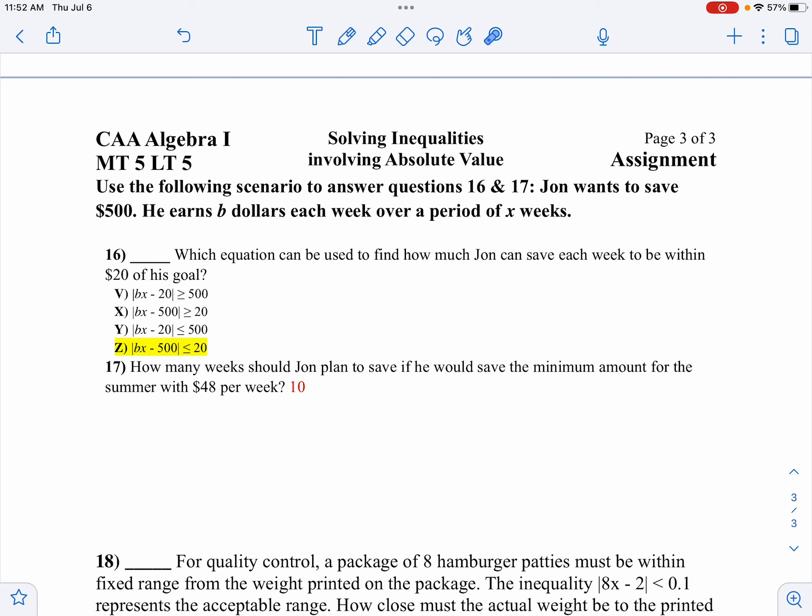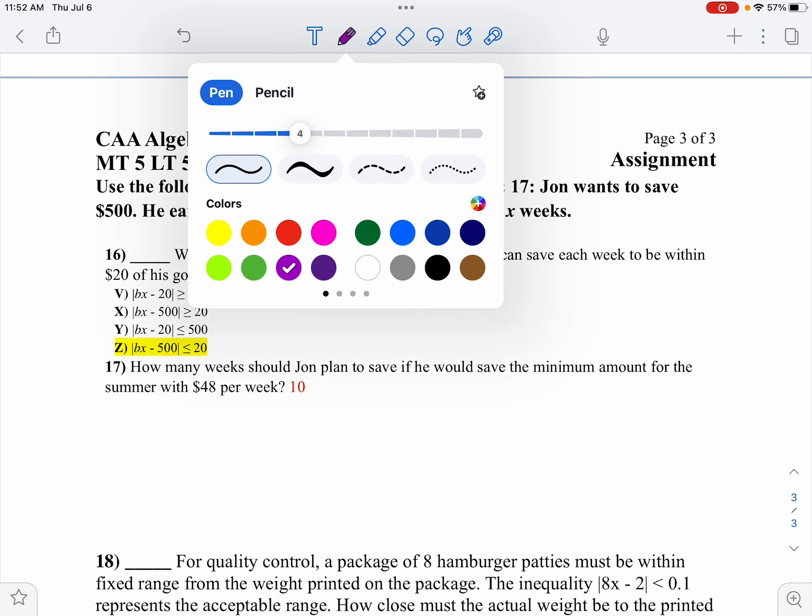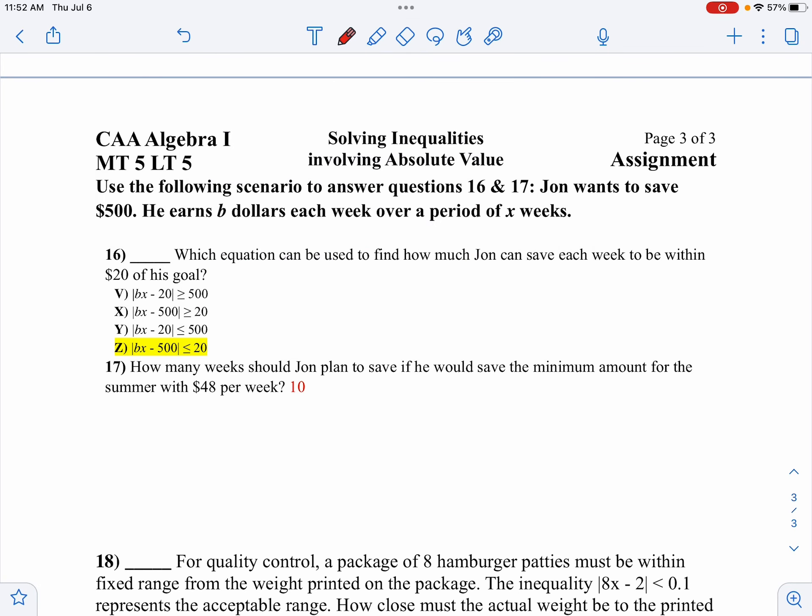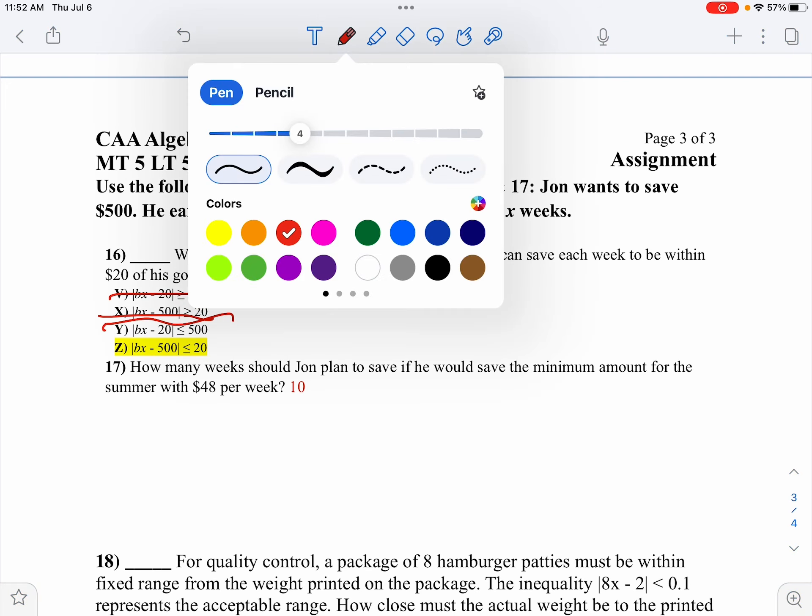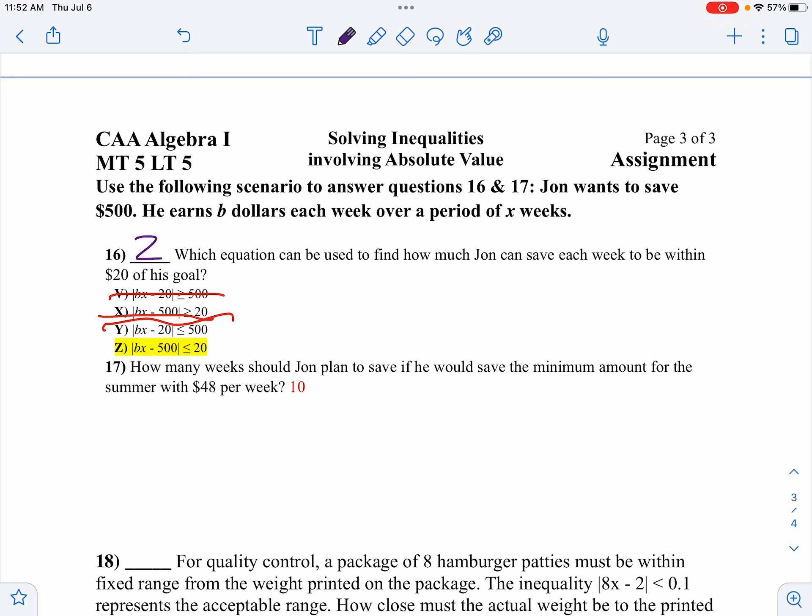So I want to be less than or equal to 20. When I look at that one, then that means I'm going to throw out V. I'm actually going to throw out X because that's greater than or equal to 20. I'm going to throw out Y. So my only answer is Z. You notice B dollars each week. I want to be 500, but I want to be within $20.